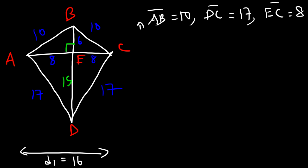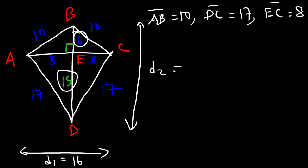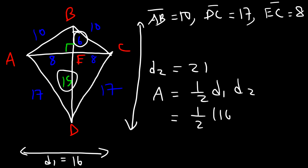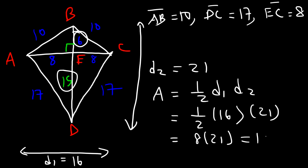Now we can calculate the length of the other diagonal D2: it's 6 plus 15, which is 21. The area of the kite is one half times D1 times D2, so that's one half times 16 times 21. One half of 16 is 8, and 8 times 21 is 168. The area of this kite is 168 square units.